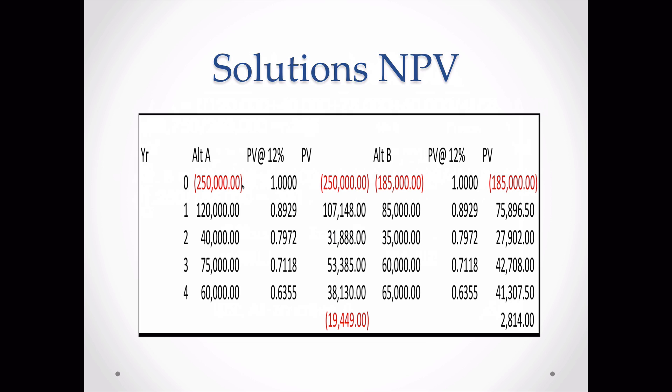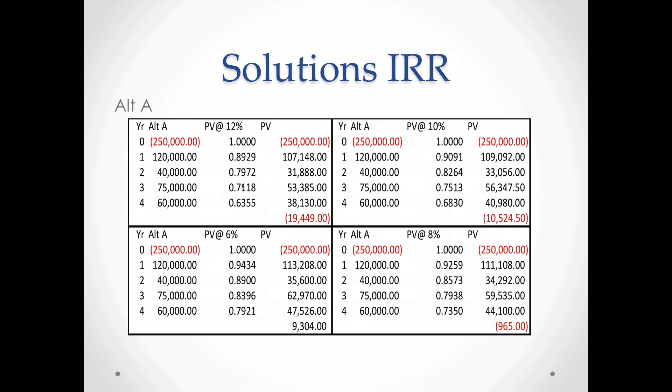For Alternative B we do the same math, finding the present value of four years of cash flows using the present value table at 12%. When we add up the initial investment and discounted cash flows, we get positive $2,814. Since it's positive, we accept Alternative B. When NPV is positive at 12%, we know the actual return is higher than 12%; when it's negative, the return is less than 12%.